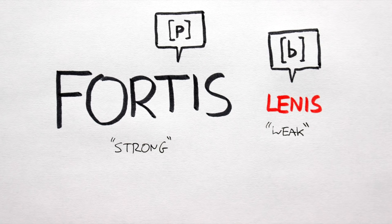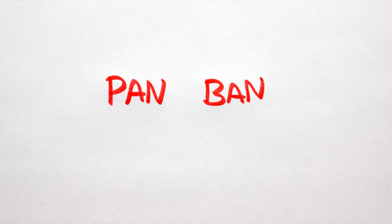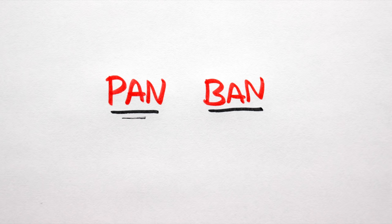So in the absence of voicing, it is this fortis-lenis contrast that enables us to differentiate between pan and ban. Pan, ban, pan, ban.